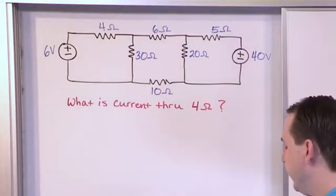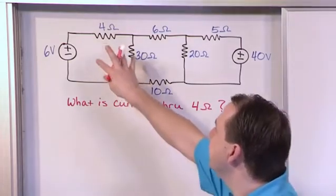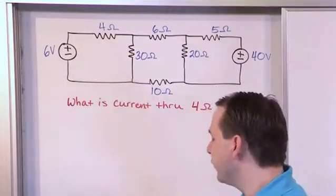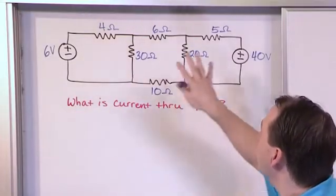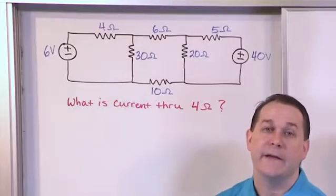Well we can use source transformations. There are many ways to tackle a problem. What I'm going to do is leave this side of the circuit kind of intact because this is what we're trying to find here, the current through that 4 ohm resistor. And I'm going to leave this intact and we're going to start at this side of the circuit and simplify going that way in order to get there.